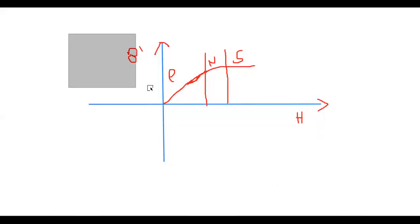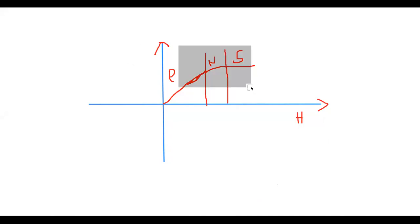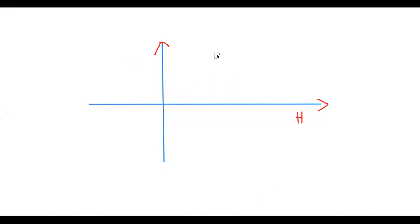Using the same B-H graph: at the beginning when we increase H, B increases until we reach saturation. So when we increase H from zero to saturation, this is the magnetizing curve as usual. We call this starting point zero and we can call the saturation point A.